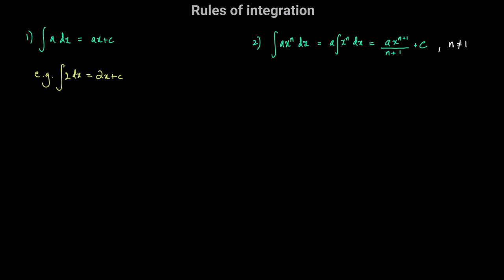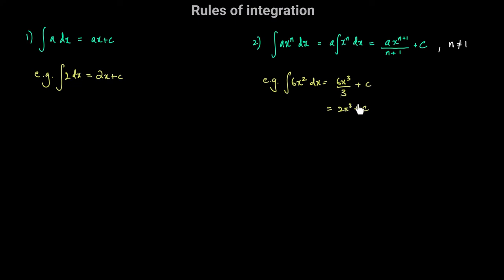This rule is valid for all powers of x — that is n — except n equals negative 1. For example, if we had to integrate 6x squared with respect to x, we increase the power by 1, so 6x squared becomes 6x cubed, and we divide by the new power. We get 6x cubed divided by 3 plus c, which simplifies to 2x cubed plus c. So the integral of 6x squared with respect to x is 2x cubed plus c.